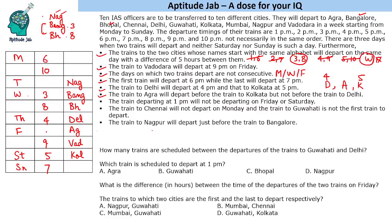One PM and 2 PM are the remaining timings. The train departing at 1 PM will not depart on Friday or Saturday, so 1 PM goes to Tuesday or Thursday. The train to Chennai will not depart on Monday, so this slot is not Chennai. Guwahati is not the first train, so Guwahati takes the later slot. One city remains — Agra is filled, Bangalore, Bhopal, Chennai, Delhi, Guwahati, Kolkata are done — Mumbai is the last remaining city.